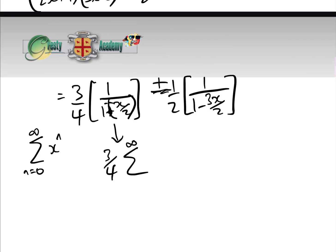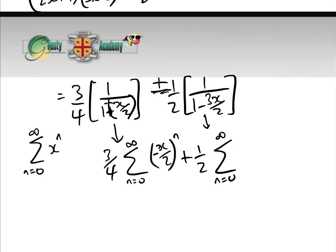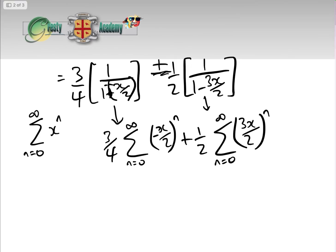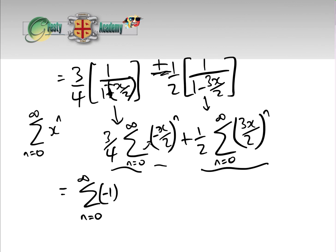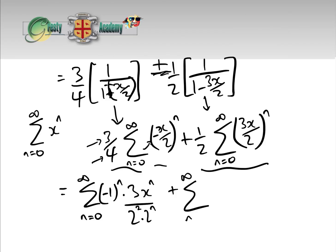Using our series expansion, the first fraction becomes (3/4) · sum from n=0 to infinity of (−x/2)^n, and the second fraction becomes + (1/2) · sum from n=0 to infinity of (3x/2)^n. Bringing the constants inside, the first sum becomes sum of (−1)^n · 3 · x^n / (2² · 2^n), and the second becomes sum of 3^n · x^n / (2 · 2^n).